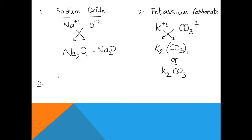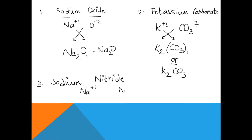Let's take another example: sodium nitride. Sodium is written as Na⁺¹ and nitride is N³⁻. We do a crisscross and touch each other's feet — the 3 goes down to sodium and it becomes Na₃N. The 1 goes to nitrogen but we don't write it. I hope this is clear.